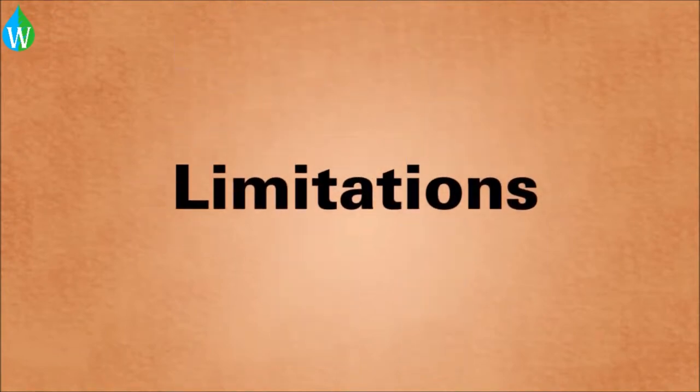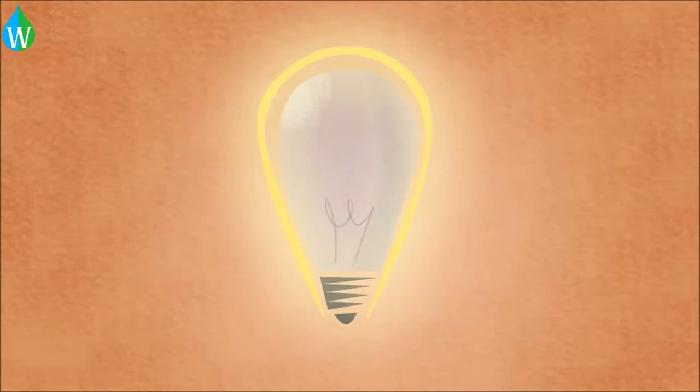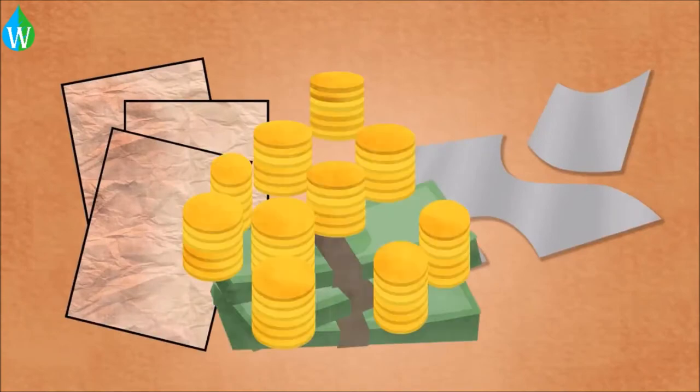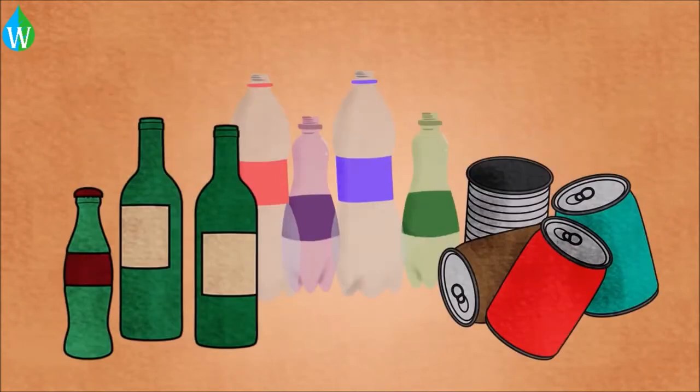Now let's consider the different limitations. First up is the energy aspect. Put simply, some materials like paper and aluminium metal are agreed to have lower processing costs when it comes to recycling them rather than using fresh materials to make new products.